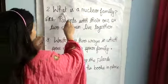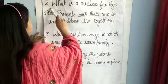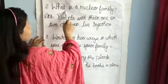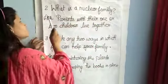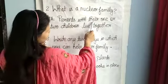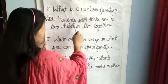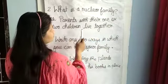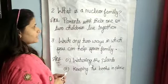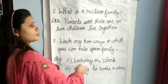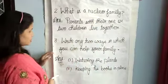Next question: Which is a nuclear family? What is a nuclear family? The answer is: one or two parents and their two children live together. So this is called a nuclear family.